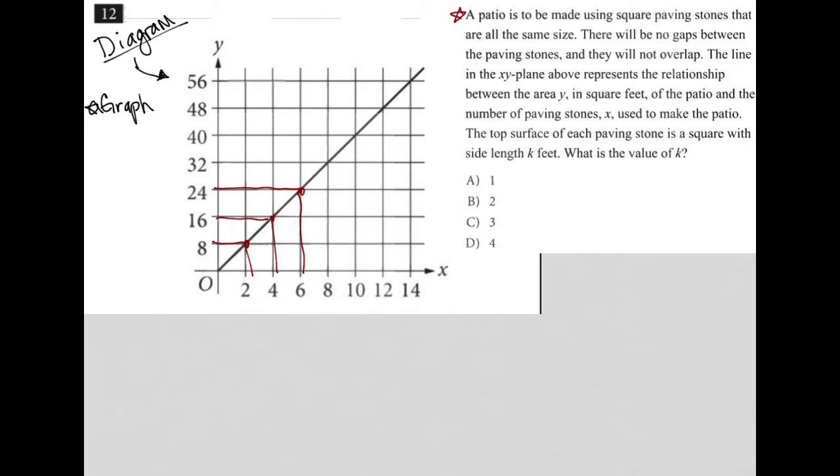The question says a patio is to be made using square paving stones that are all the same size. There will be no gaps between the paving stones and they will not overlap.